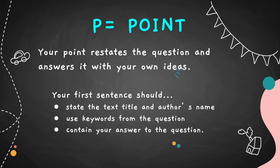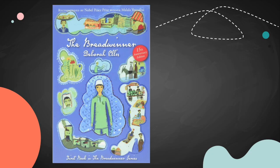The point in a PEE restates the question and answers it with your own ideas. It's the first sentence in the PEE paragraph. Whenever you're writing a PEE paragraph in response to a question about a text or a novel, your first sentence of your PEE should state the title and the author's name of the text that you're looking at.